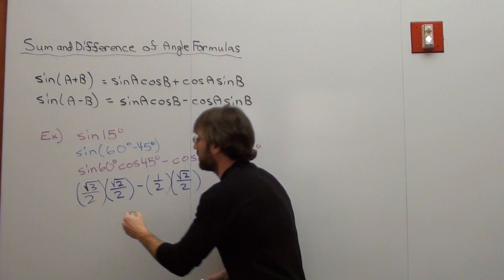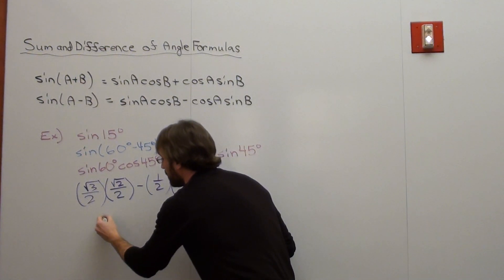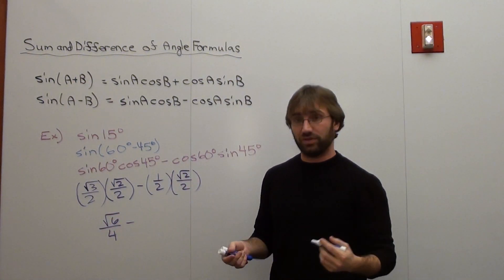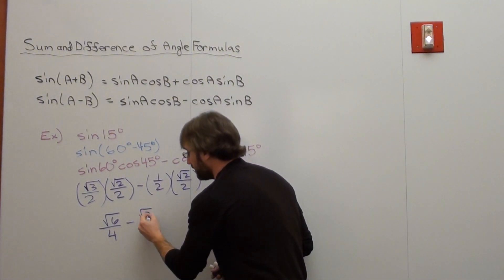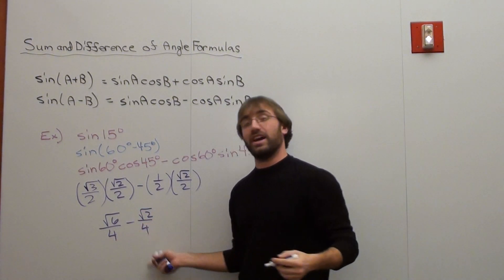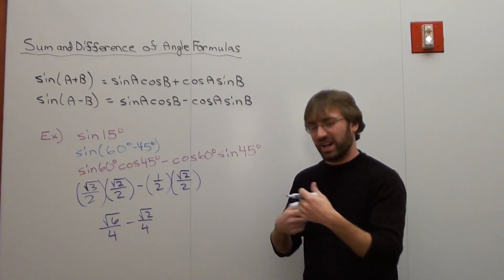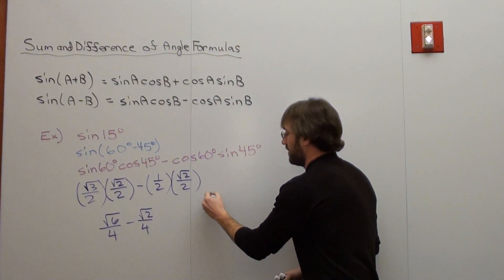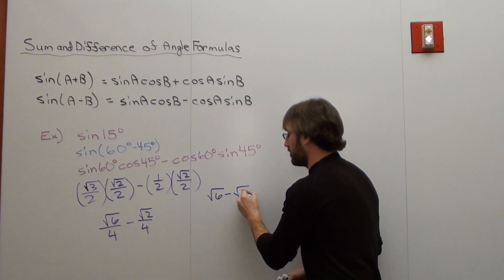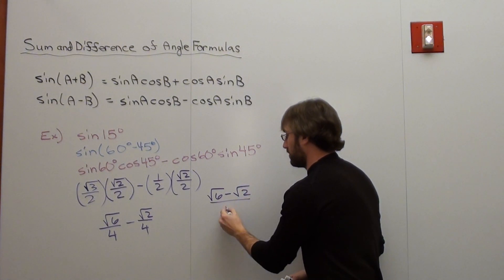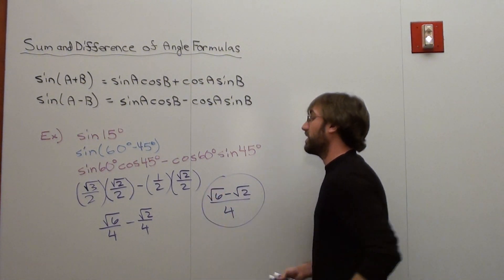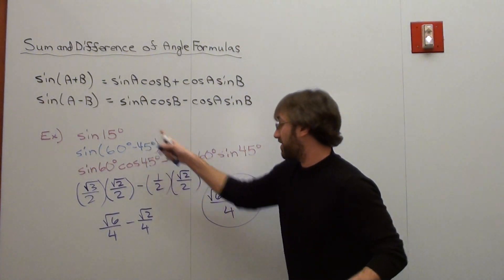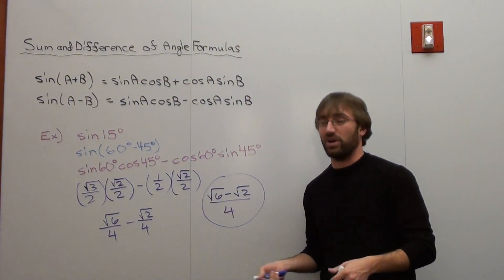That gives us root 6 over 4, subtracted by root 2 over 4. The denominators are the same, but we can't combine the numerators since they're different radicals. So the answer is root 6 minus root 2, all over 4.